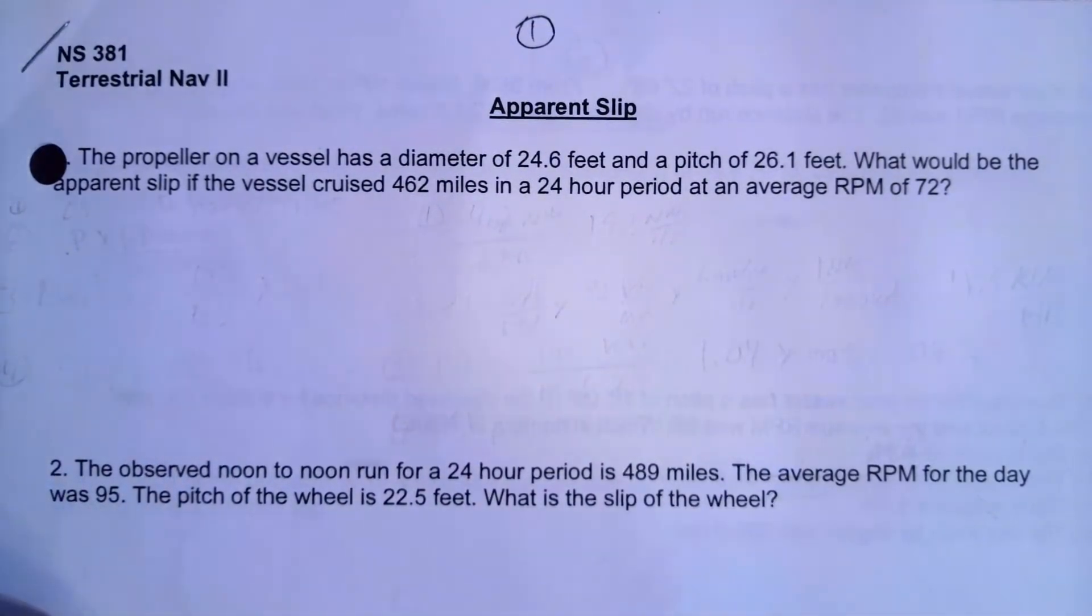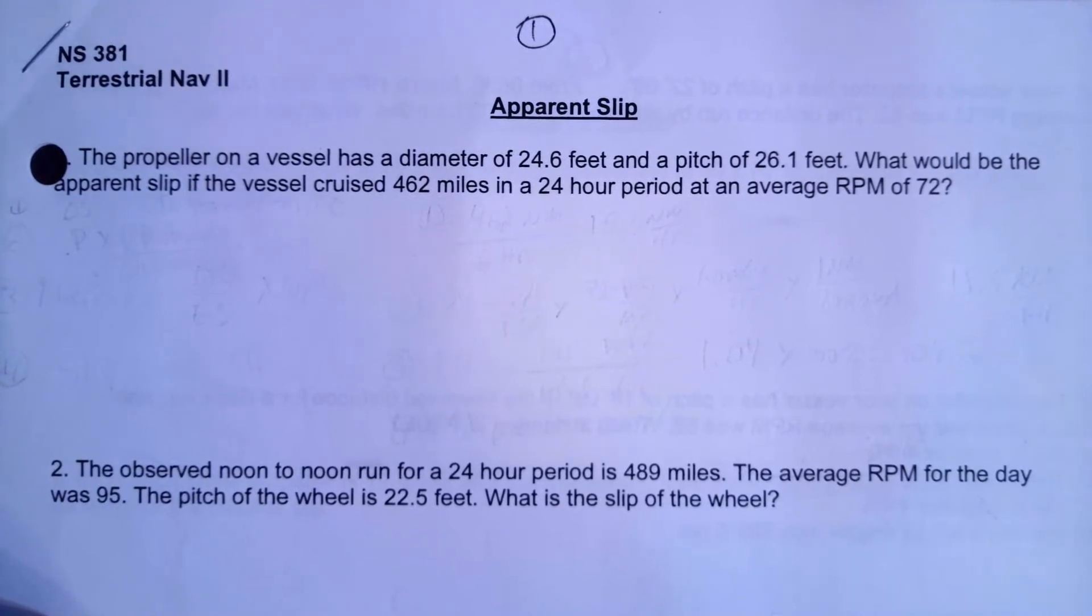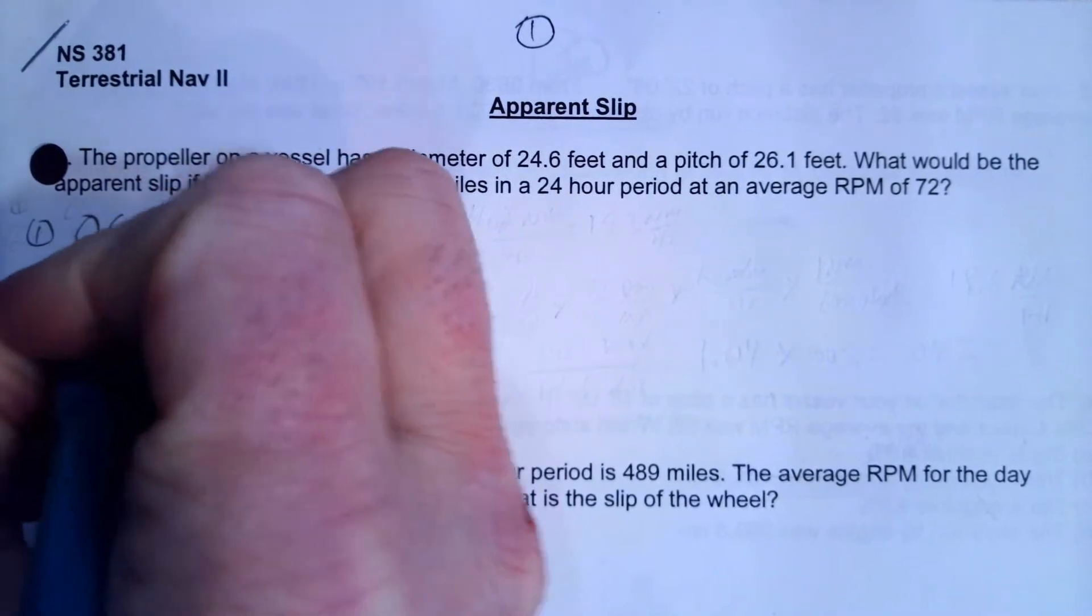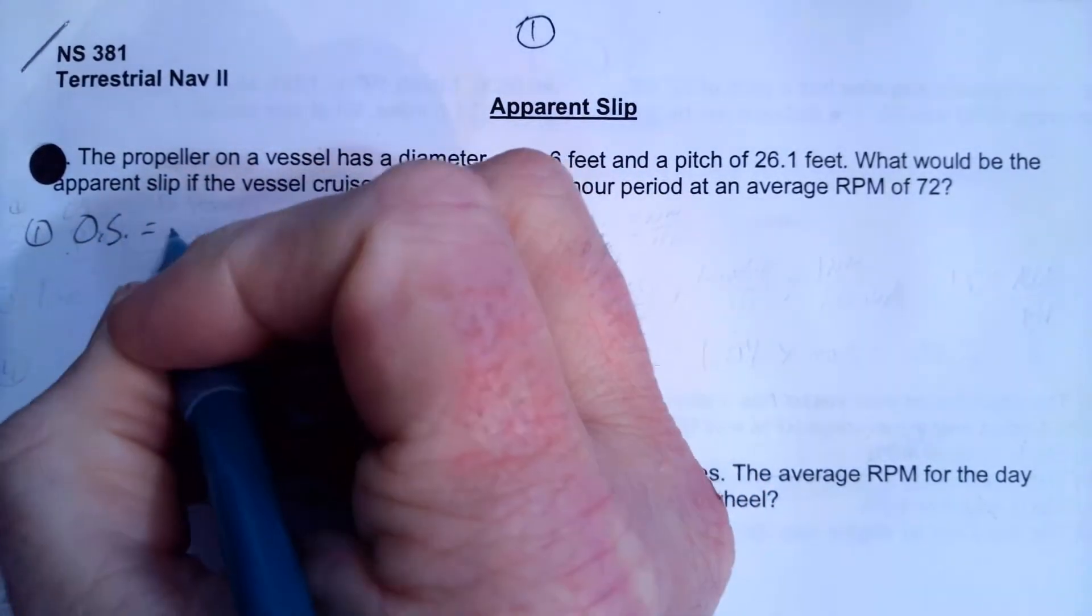So we're really going to use four different formulas in order to calculate this. We're gonna need a formula to calculate our observed speed, we're gonna need a formula to calculate our engine speed, and then we're going to compare those two. We're going to create a ratio of those two to calculate our efficiency. So we'll divide observed speed by the engine speed.